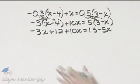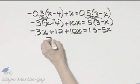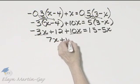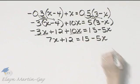Do I have any like terms? Yes, I do on the left side. Negative 3x plus 10x, that is 7x plus 12 is equal to 15 minus 5x.